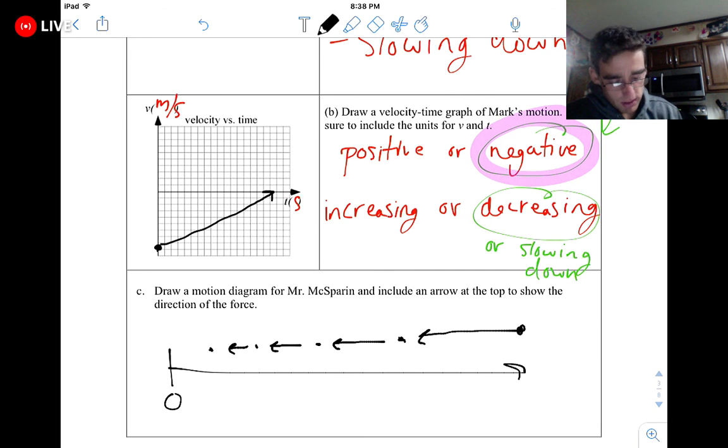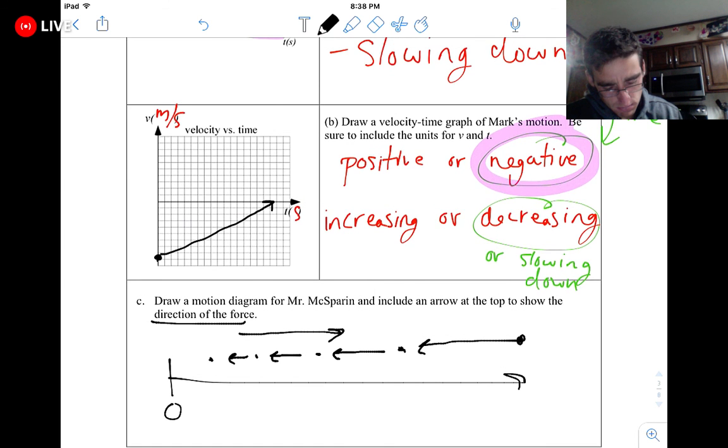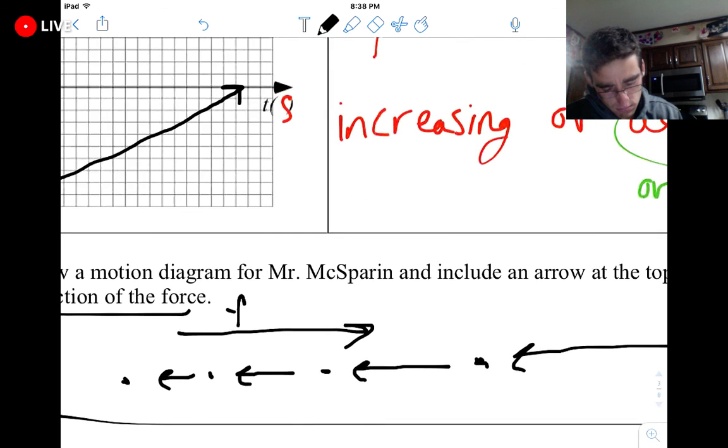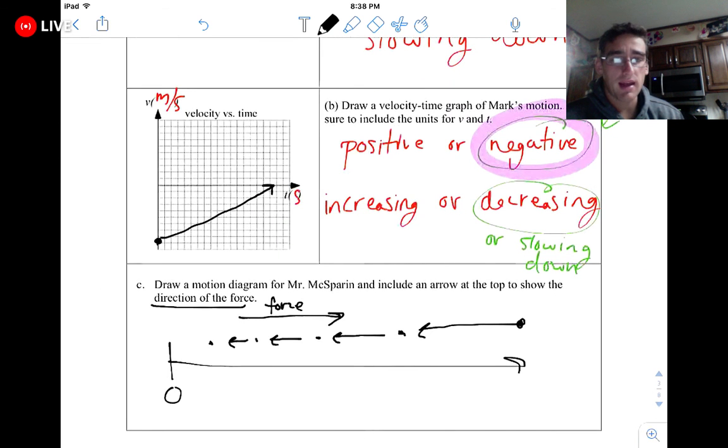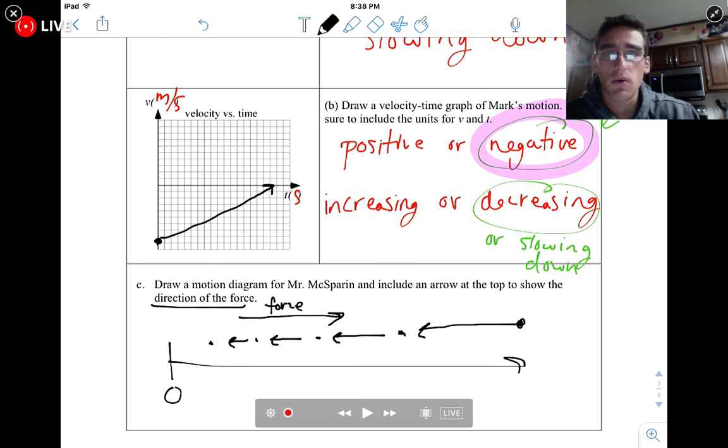Now the last thing that it wants, it wants to know the direction of the force. Well, to slow something down, the force has to push against it. So my force is pushing back that direction. If it had been speeding up, my force would go the other way. It would go with the arrows. But to slow down, it's got to push against it. All right, guys. Now you try the next one on your own.